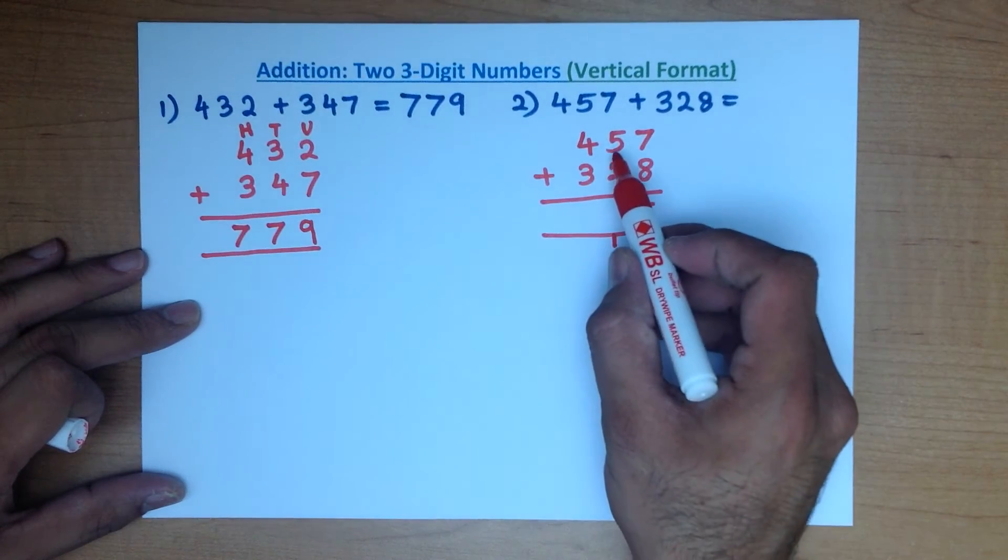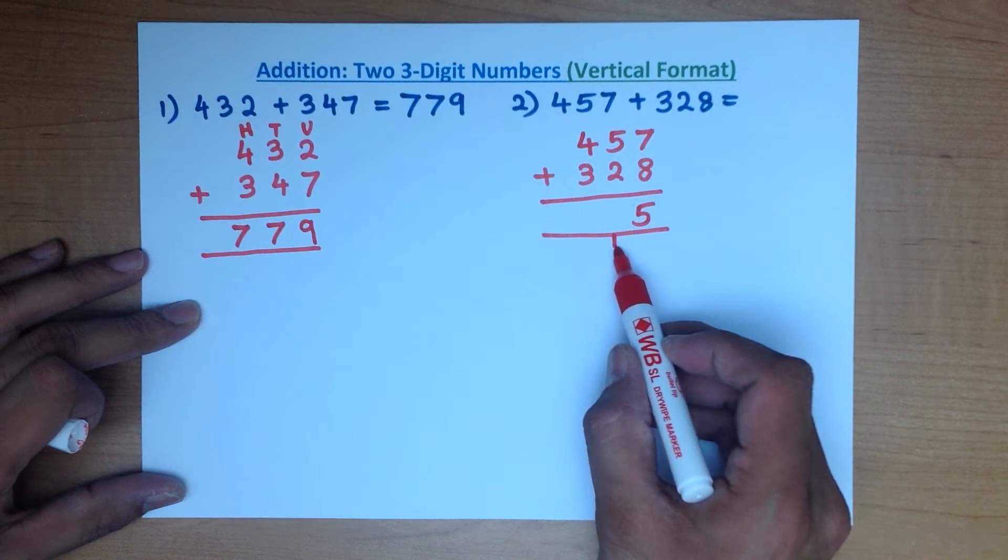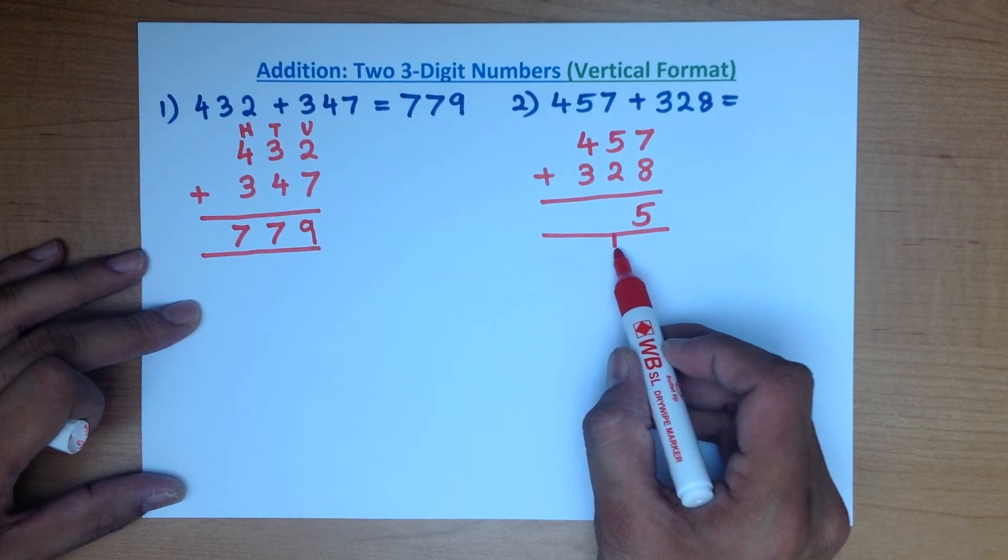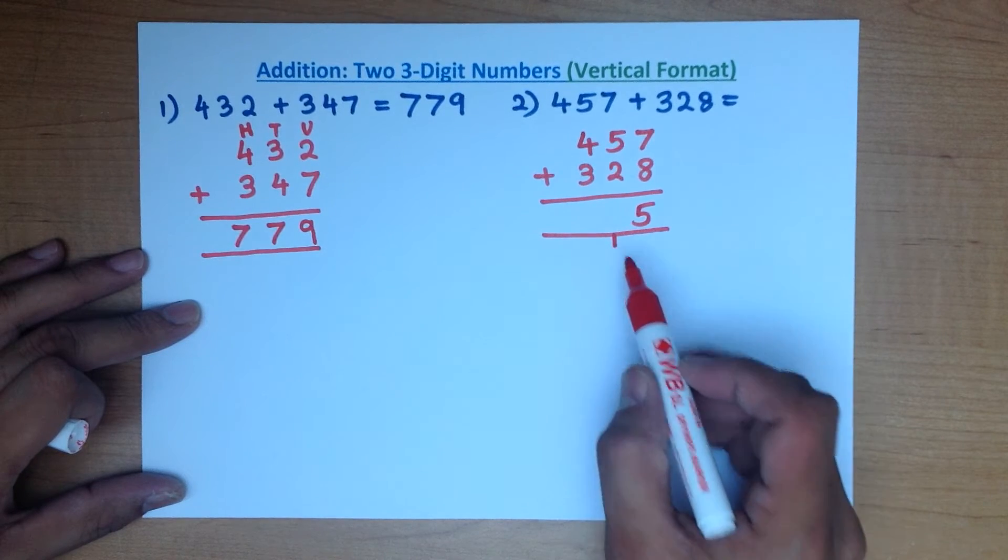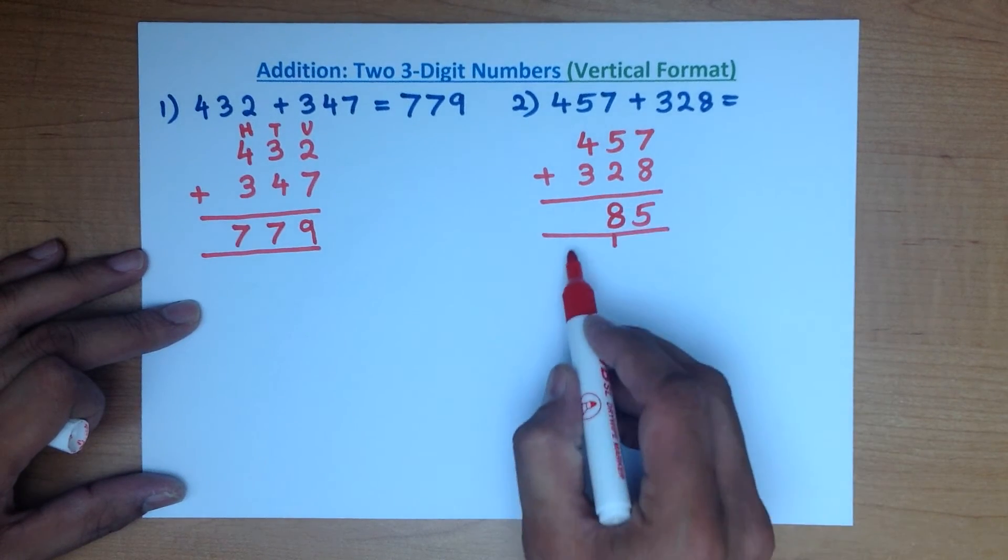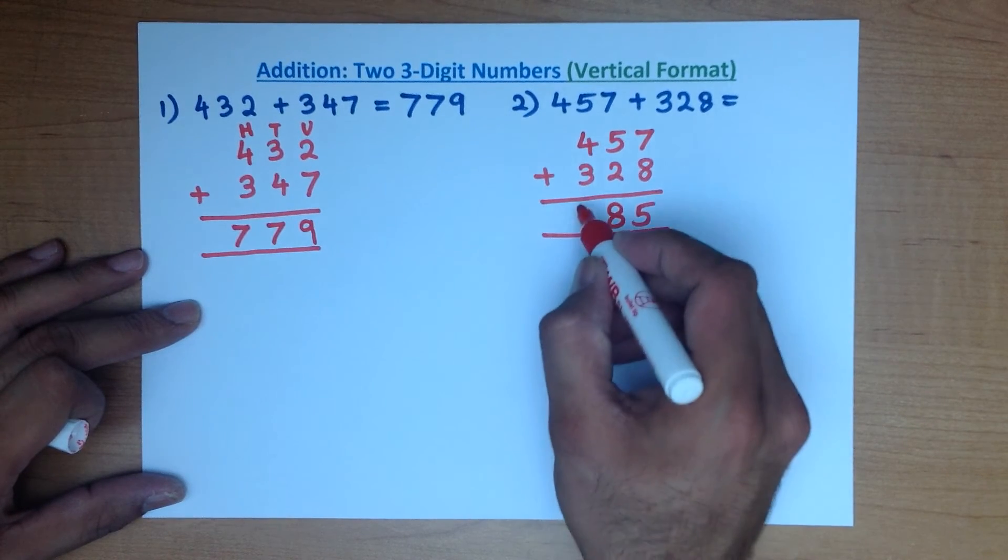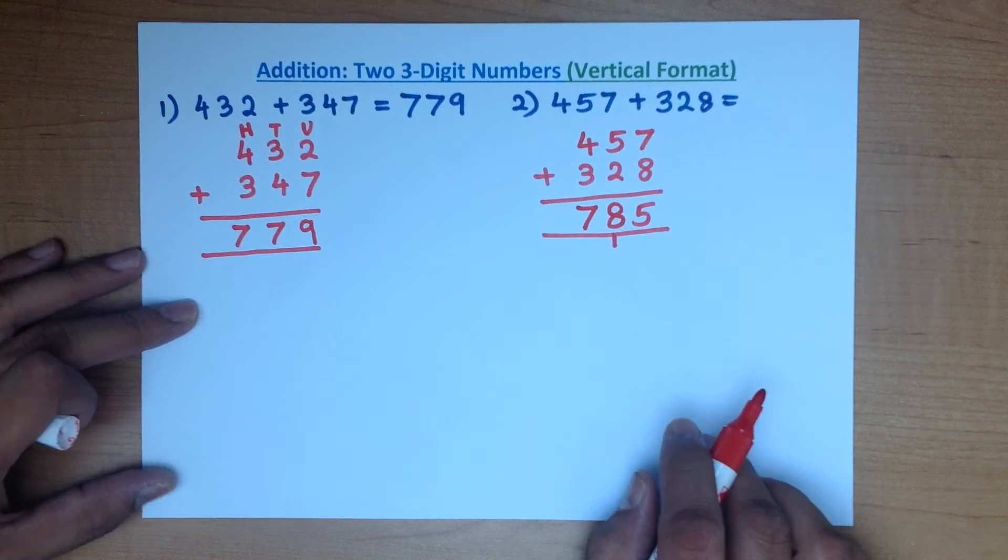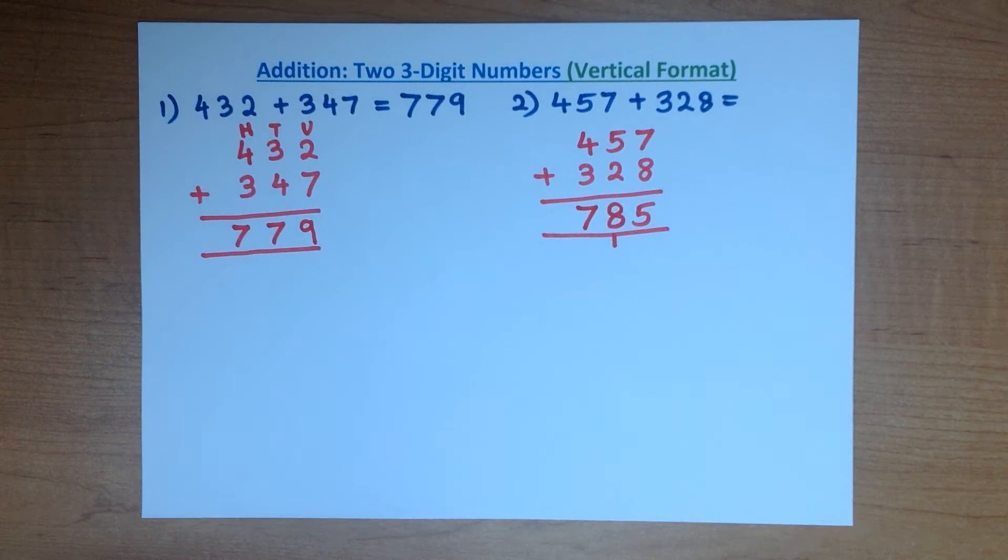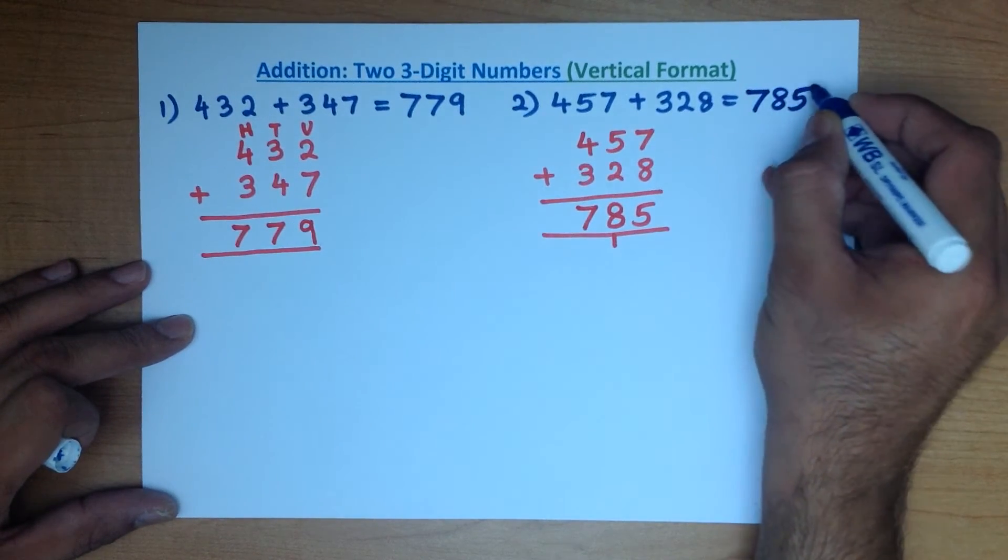We now add the tens. 5 plus 2 plus 1. Well, 5 plus 2 is 7, plus 1 is 8. And lastly, the hundreds column. 4 plus 3 is 7. And that is our answer. 457 plus 328 is 785.